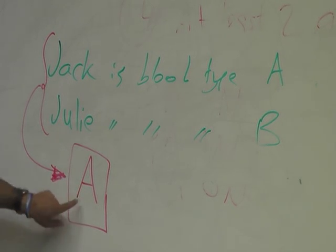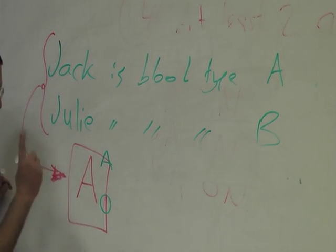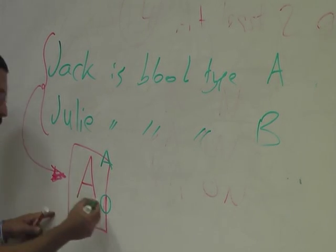First of all, the fact that he's blood type A narrows it down to either AA or AO. Which one is it? And why? It's gotta be what? It's gotta be AO. Why?